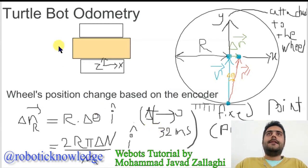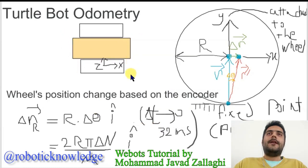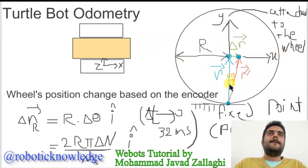Here you can see our turtle bot from the top view. The yellow box is its frame and the white boxes are the wheels. And here you can see this circle — actually the wheel.